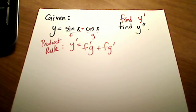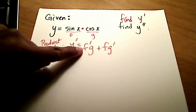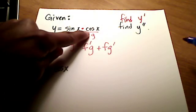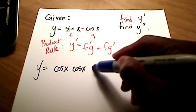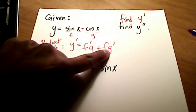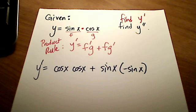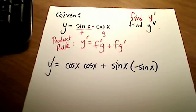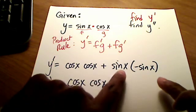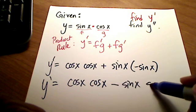So let's find y prime. Y prime is equal to f prime — if f is sine x, then that's the derivative of sine, which is cosine — times g, which is cosine x, plus f, which is sine x, times g prime. The derivative of cosine is negative sine x. So let me clean this up: cosine x times cosine x, minus sine x times sine x.